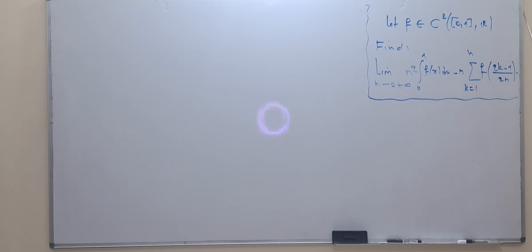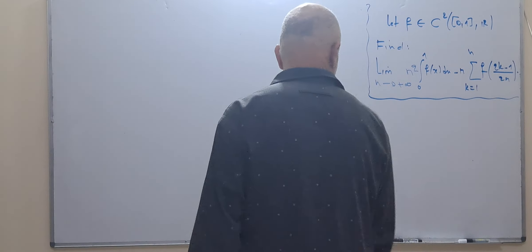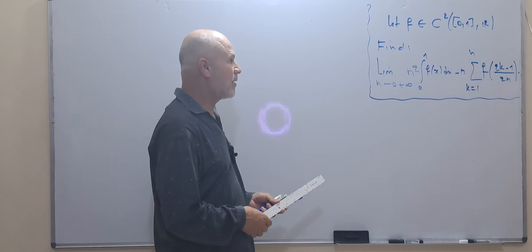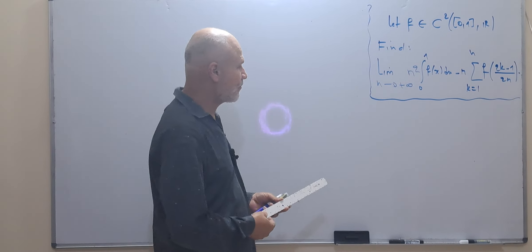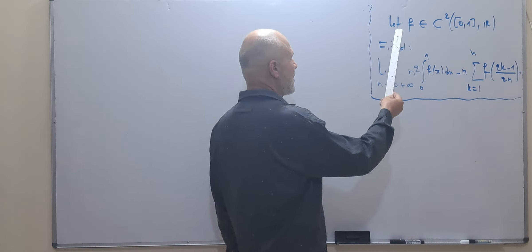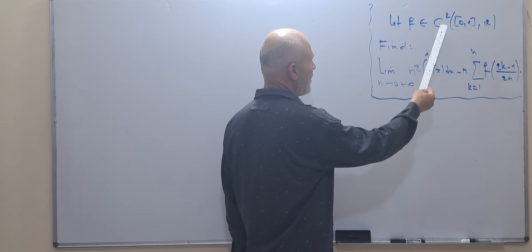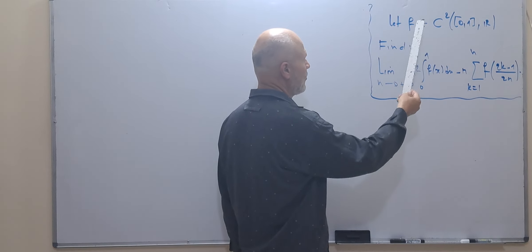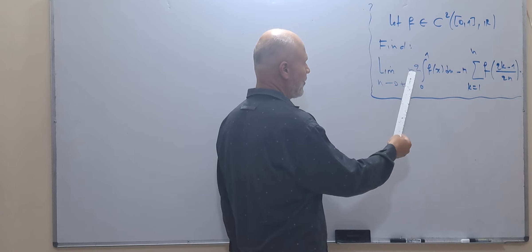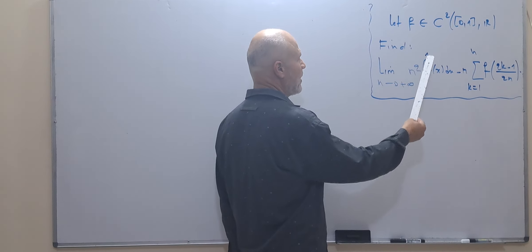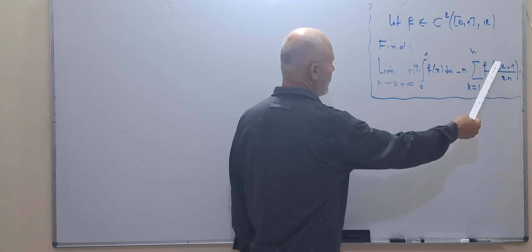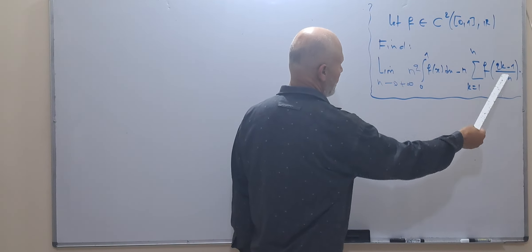Hello everybody, welcome once again to this video about Riemann sums. Here we have to calculate a limit using Riemann sums. The exercise says: let f be a function of class C², which means f is twice differentiable and the second derivative is continuous. Find the limit of n² times the integral from 0 to 1 of f dx, minus n times the sum from k equal 1 to n of f((2k−1)/2n), when n goes to plus infinity.